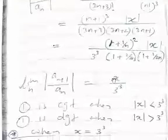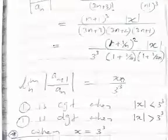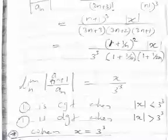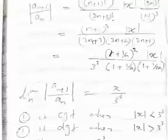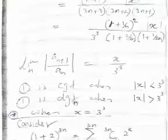As n goes to infinity, the bracketed terms all go to 1, and we're left with |x|/27. We know that if |x|/27 < 1 according to the ratio test, the power series is convergent; otherwise it's divergent.